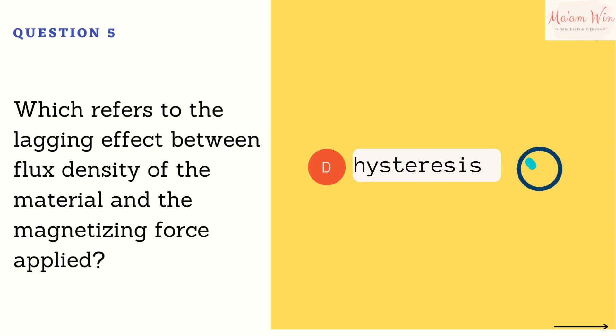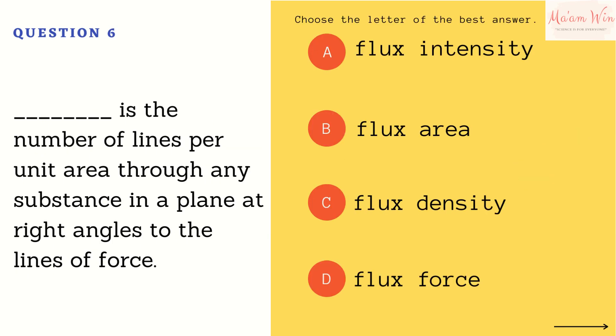Let's check your answer. The right answer is letter D. Hysteresis is the lagging of the magnetization of a ferromagnetic material such as iron behind the variation of the magnetizing field.